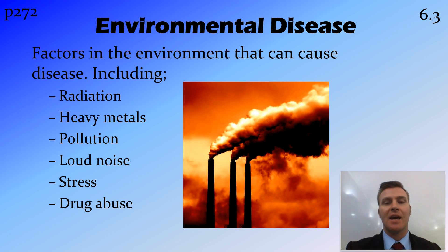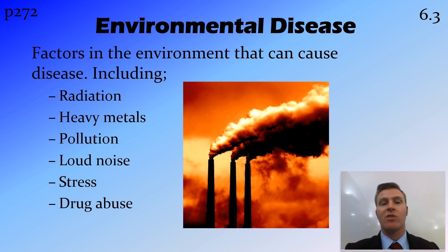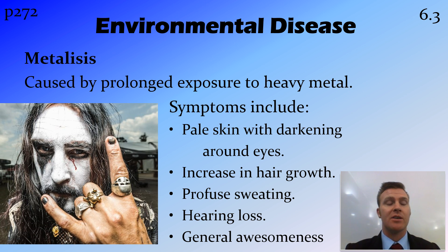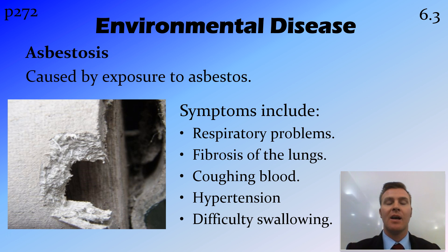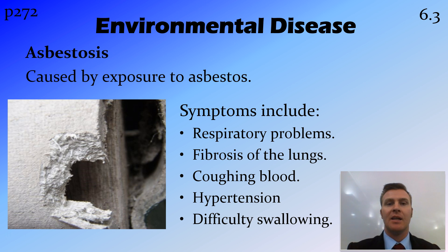An environmental disease is a disease caused by the environment. There are a few different environmental factors, for example: radiation, heavy metals, pollution, noise, stress levels, and drug abuse. We're going to concentrate on asbestosis. It's caused by exposure to asbestos, which was used in a lot of houses. This includes problems like respiratory problems and fibrosis of the lungs — fibrous tissue growing that causes the lungs not to work very well. When this tissue tears, it causes coughing up of blood, hypertension, and difficulty in swallowing. This is quite a serious disease, one that we've only really recognised in fairly recent times.